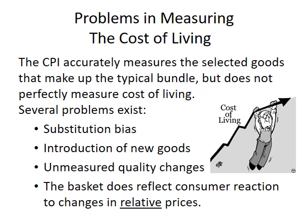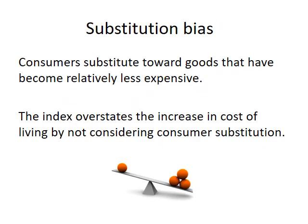Problems in measuring the cost of living: the CPI accurately measures selected goods in the typical bundle, but does not perfectly measure the cost of living. Substitution bias occurs when people move to buying things on sale — the index overstates the increase in the cost of living by not considering consumer substitution. Introduction of new goods is another issue: new products result in greater variety, so consumers need fewer dollars to maintain a given standard of living.